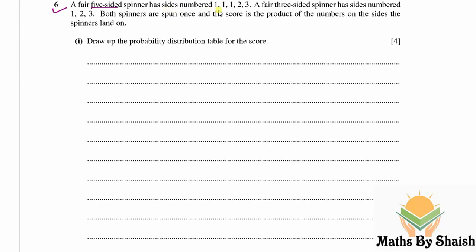A fair three-sided spinner has sides numbered 1, 2, and 3. Both spinners are spun once and the score is the product of the numbers on the sides the spinners land on. We need to draw the probability distribution table for the score, so first let's find all the possible scores.